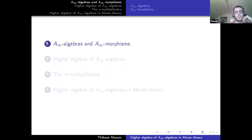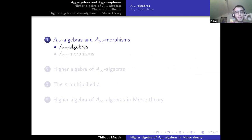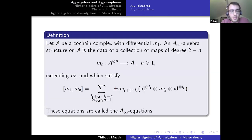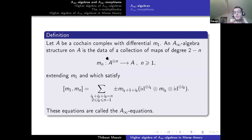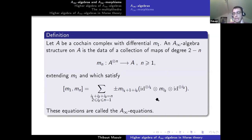Disclaimer: this talk is going to be algebraic in its first part. I'll begin with some recollections on A-infinity algebras and A-infinity morphisms. An A-infinity algebra is the data of a cochain complex whose differential I denote M1, and an A-infinity algebra structure on A will be the data of a collection of maps which have degree 2 minus n, of arity n from A to A, which satisfy the A-infinity equations.